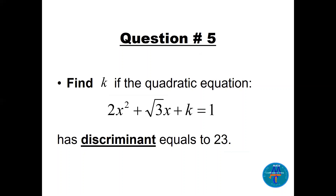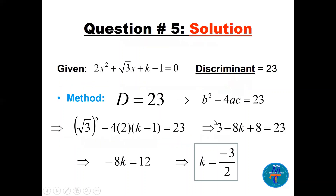Question 5: Find k if the quadratic equation has discriminant equal to 23. The discriminant is D = b² − 4ac. Find a, b, and c carefully — there's a trick: bring 1 to the left so the equation equals 0. Here a = 2, b is the coefficient involving k, and c = k − 1. Substituting: b² − 8(k − 1) = 23. Simplify: −8k + 8 = 23 − b², giving −8k = 12, so k = −3/2.